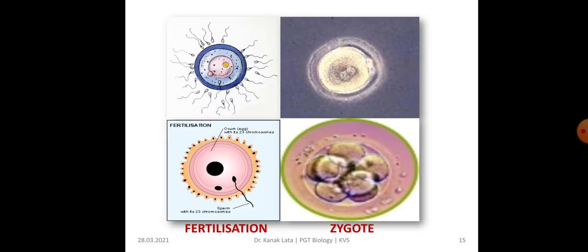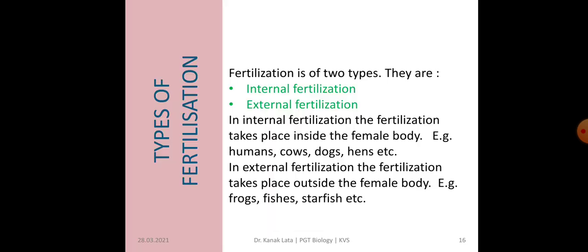Here you can see the fertilization — the fusion of female and male gametes. After fertilization, a zygote is formed which goes on dividing and re-dividing. Now let us see what are the different types of fertilization. There are two different types: internal fertilization and external fertilization.